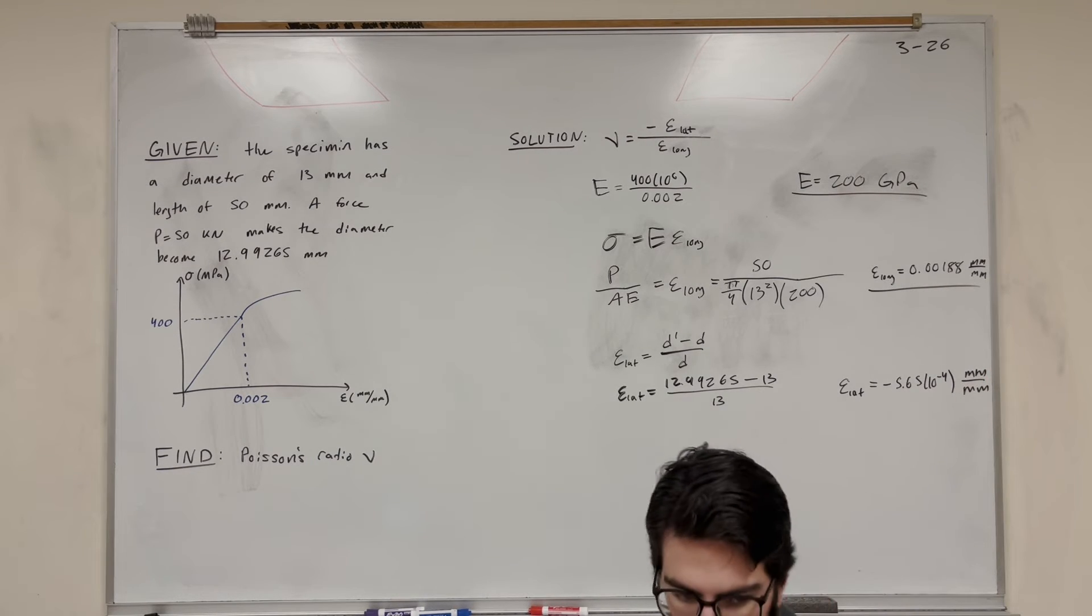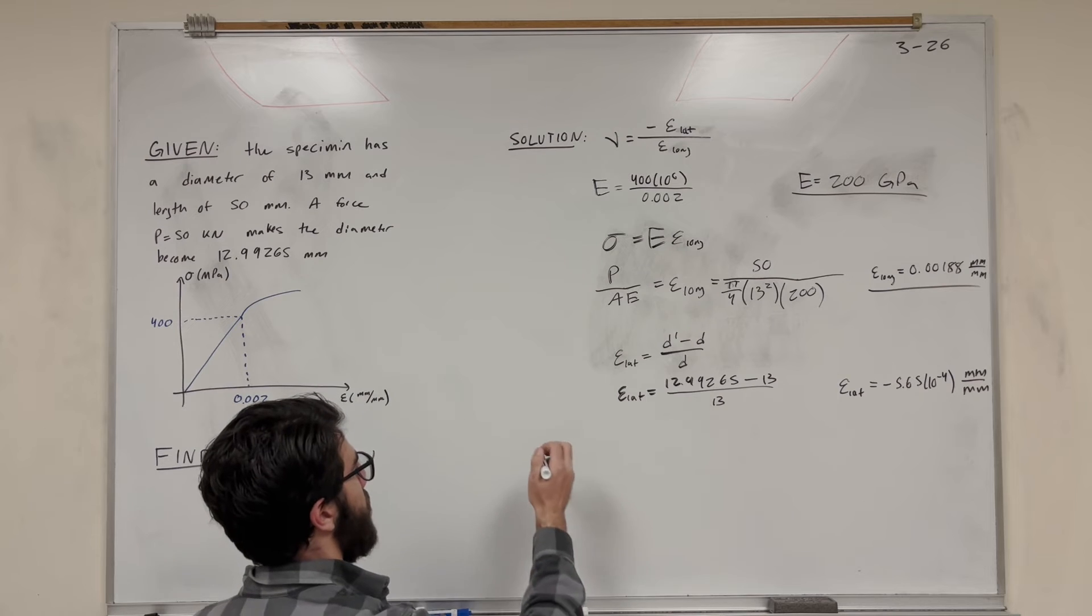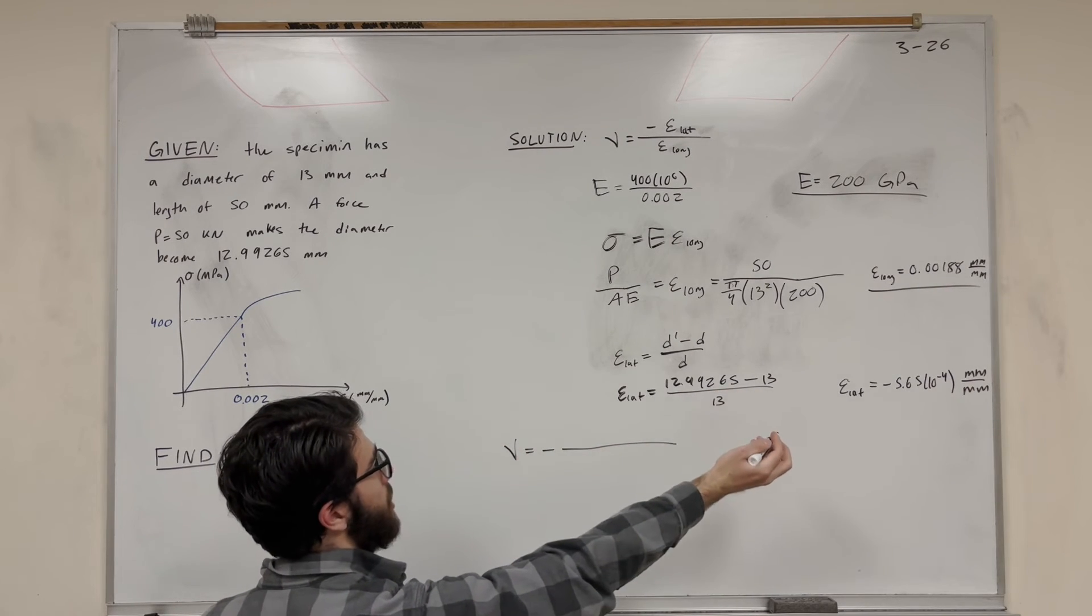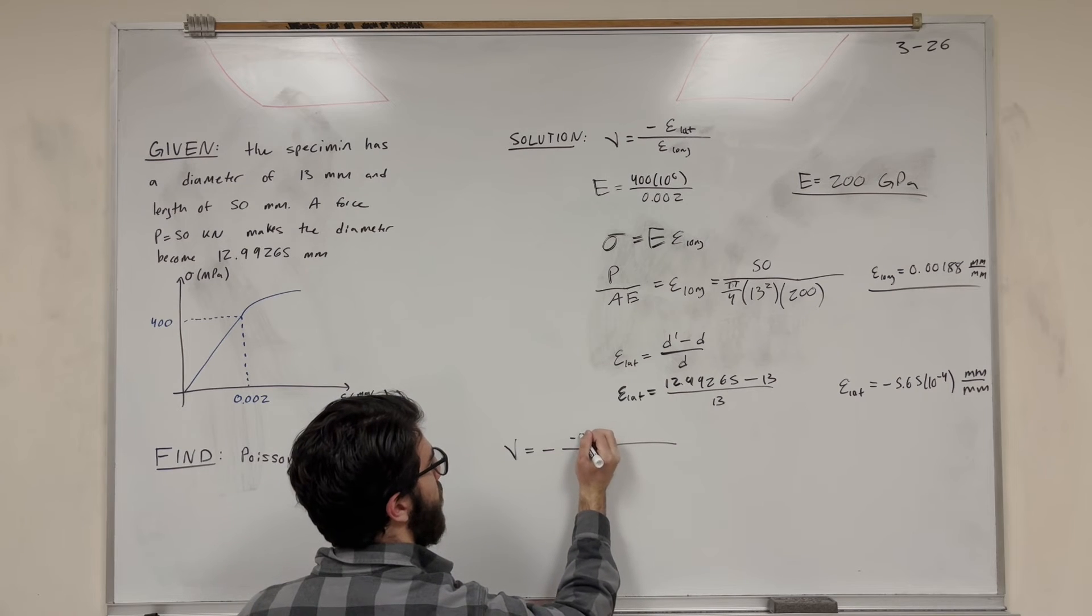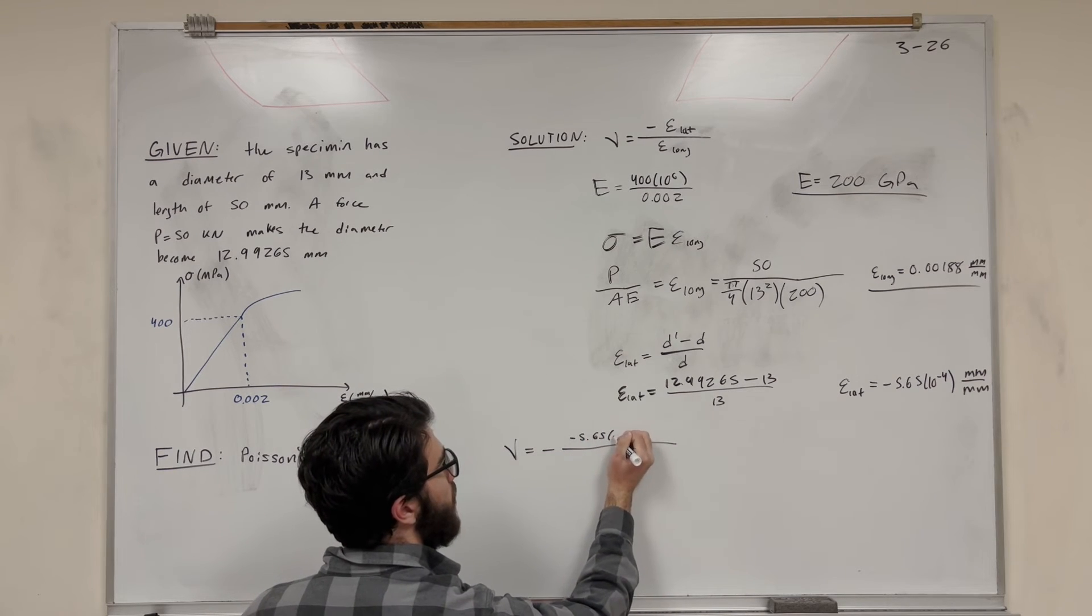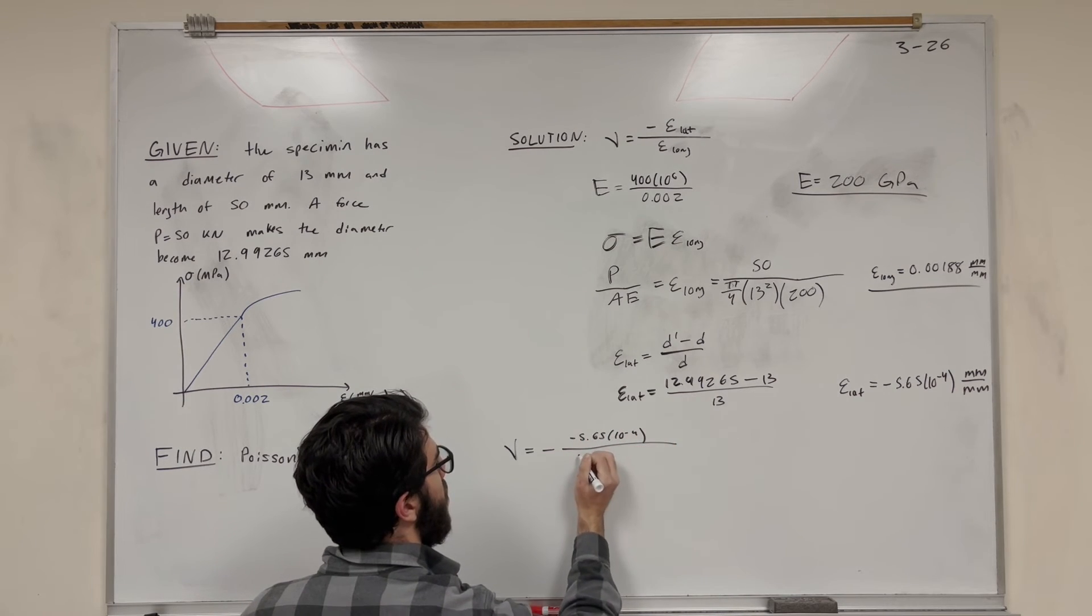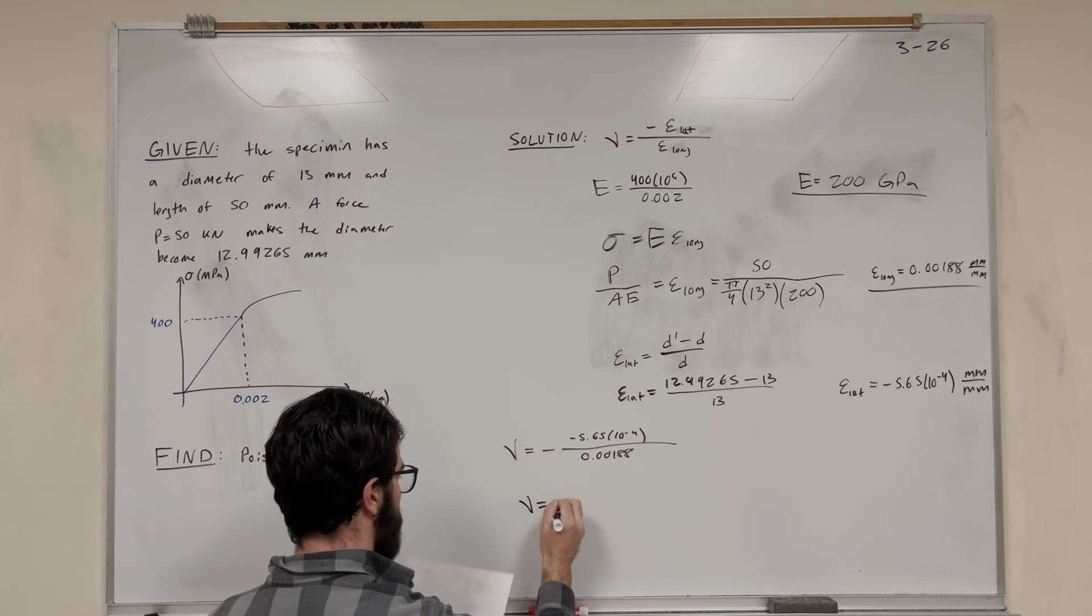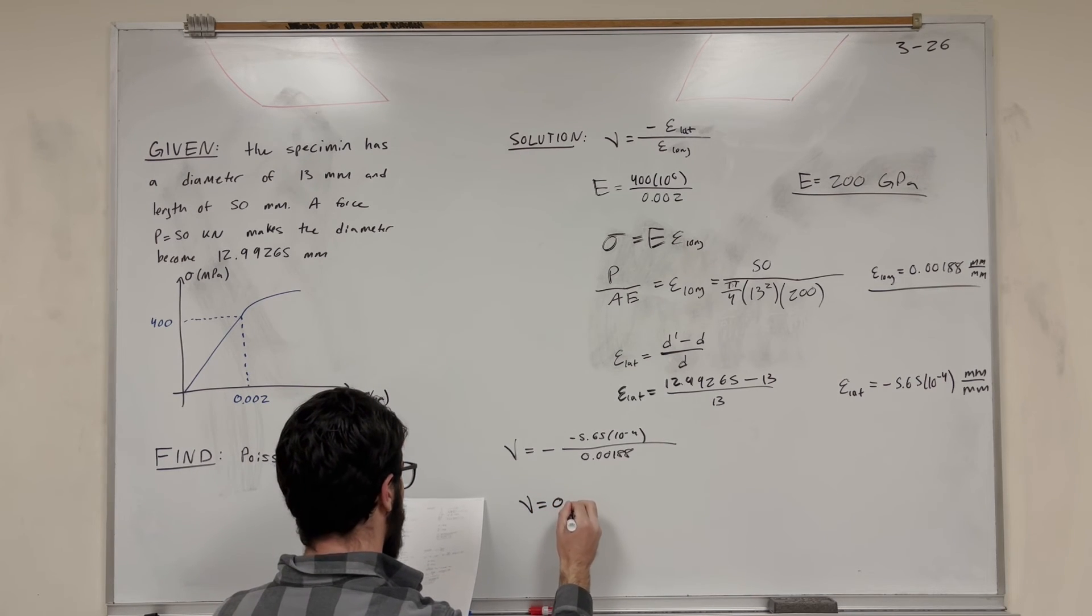Okay, so now all we have to do is plug it into Poisson's ratio, right? So Poisson's ratio, negative lat over long. So we just found lat, negative 5.65 times 10 to the negative fourth. And then long, we found 0.00188. You're going to find that Poisson's ratio is equal to 0.300.